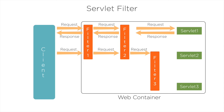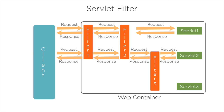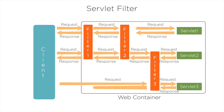After processing the code present in all three filters, the request is given to Servlet 2 for processing. The response is also passed across all three filters before being given to the client. Whenever the client sends a request for Servlet 3, Filter 3 alone is processed, then the request is given to Servlet 3, and once processing is done the response is given to the client.